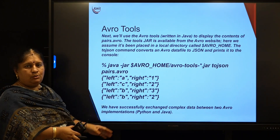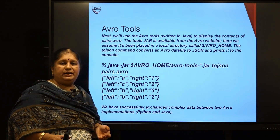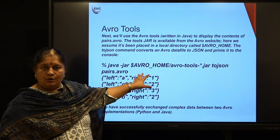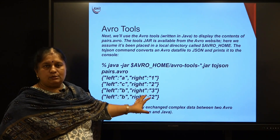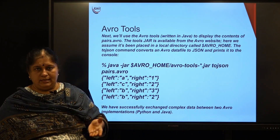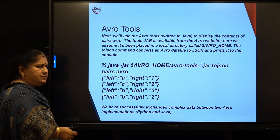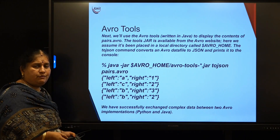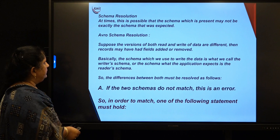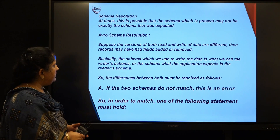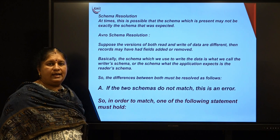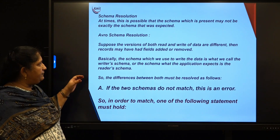So this is how when you write an Avro file using Python, and somebody wants to access it through Java, it is possible. We say Avro supports interoperability, which is a very powerful feature. And schema resolution — we have to learn something called schema resolution, which is very, very important when learning the concepts of Avro.